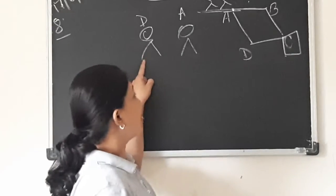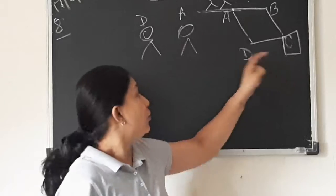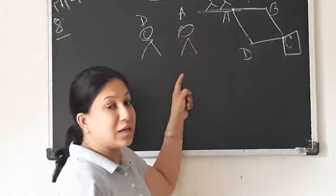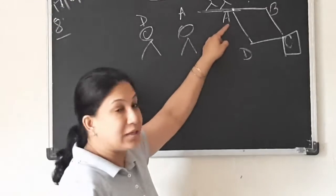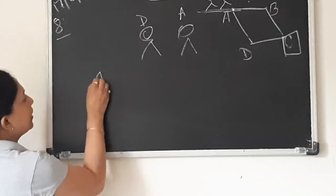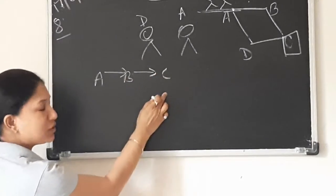But Dinesh will travel from A to B and B to C. Whereas Aiyu is taking another route. Correct? Then, Dinesh has selected the path A to B and then from B to C.